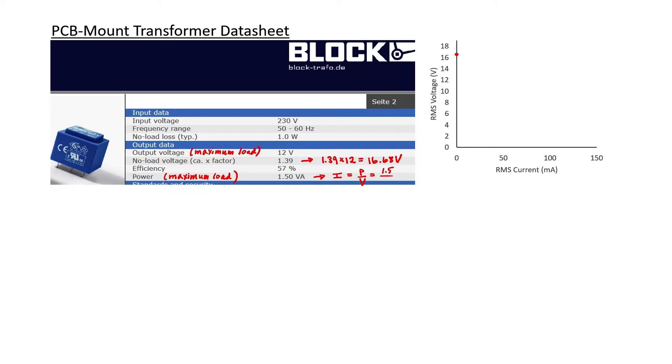This will give us another point on the graph. We know that current is power divided by voltage, and the voltage at maximum load is 12 volts. Therefore we can find the current. It's 0.125 amperes, and this corresponds to 12 volts. Therefore we have another point on our graph.